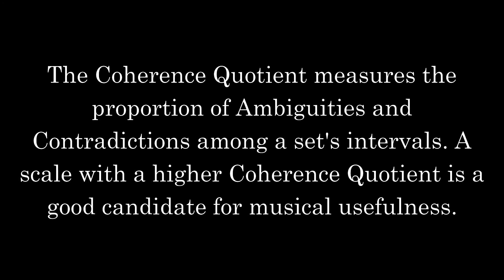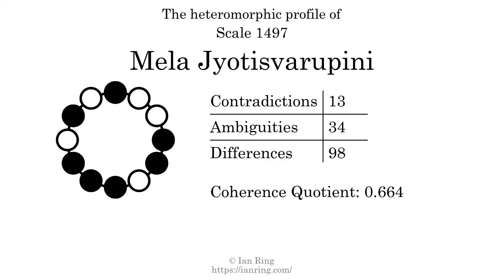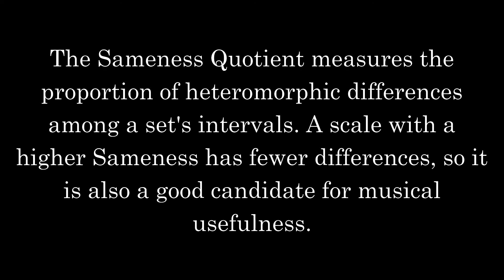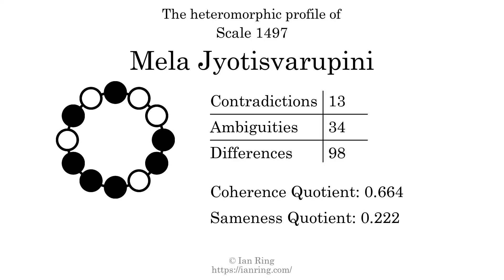The coherence quotient measures the proportion of ambiguities and contradictions among a set's intervals. A scale with a higher coherence quotient is a good candidate for musical usefulness. The coherence quotient is 0.664. The sameness quotient measures the proportion of heteromorphic differences among a set's intervals. A scale with a higher sameness quotient has fewer differences, so it is also a good candidate for musical usefulness. The sameness quotient is 0.222.